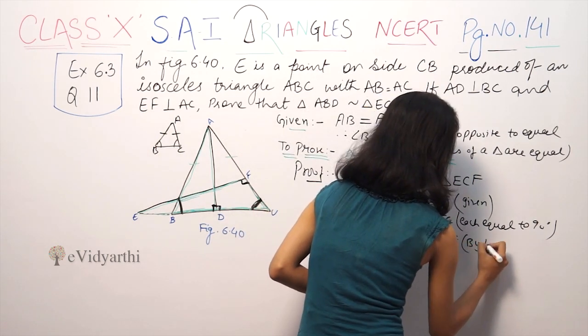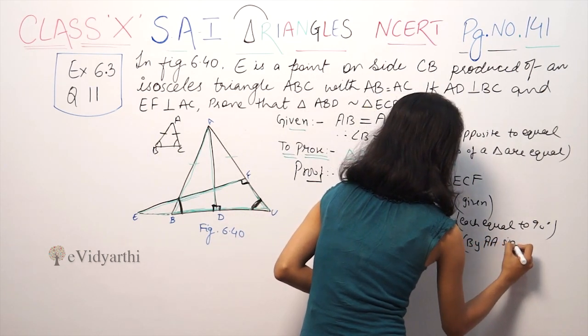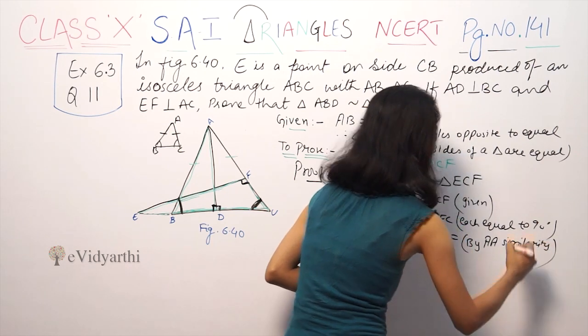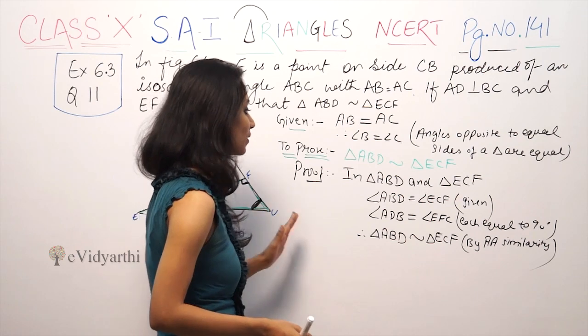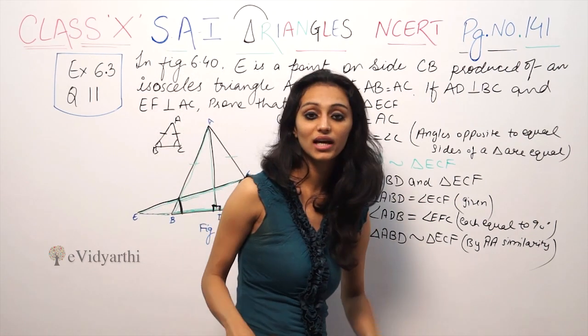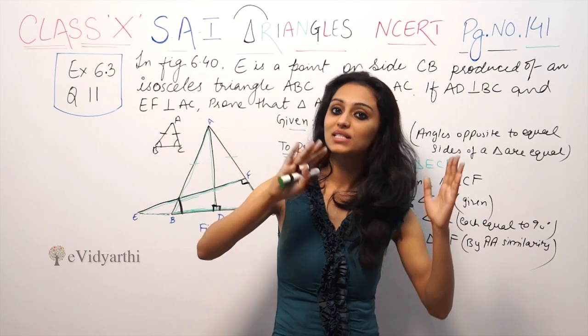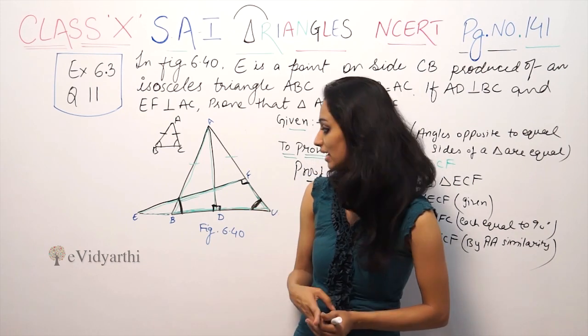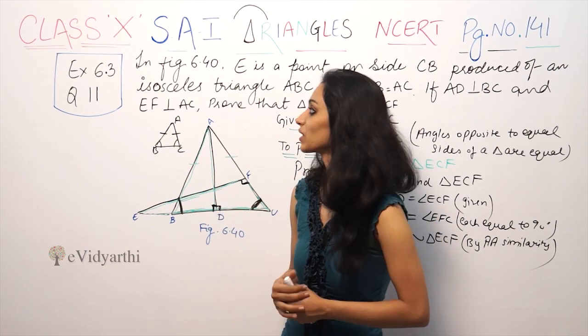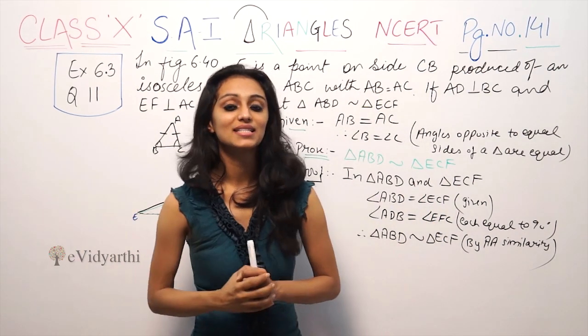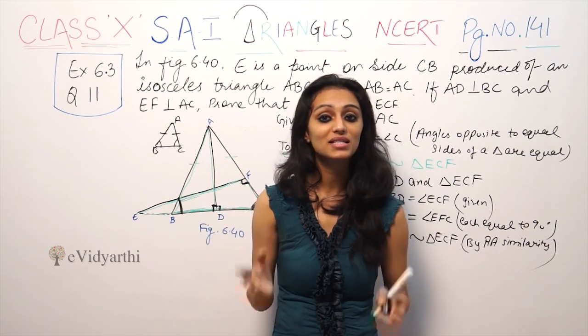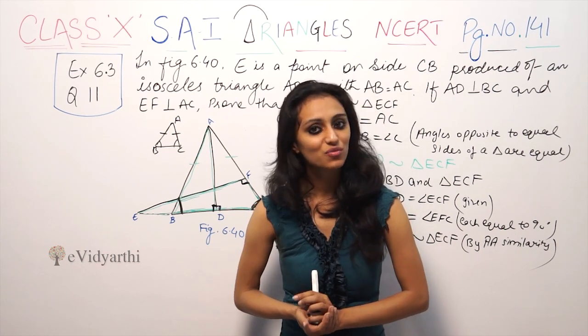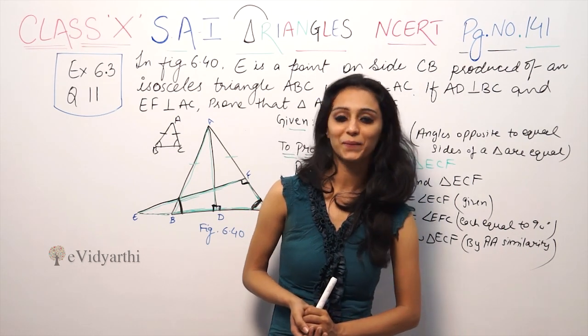So first of all we have seen isosceles triangle, we have two sides equal, then the opposite angles are equal. Second thing, we have angles of 90 degrees. So this was the 11th question, exercise 6.3 of NCERT. If there is any problem please tell us. See you in the next video for more questions. Goodbye.